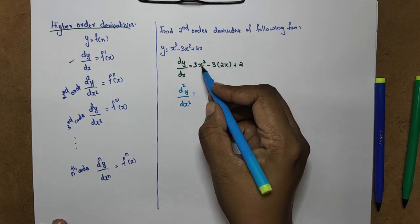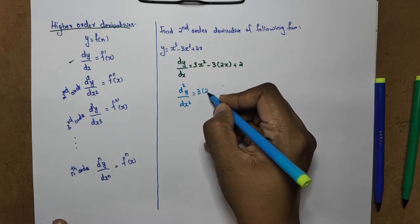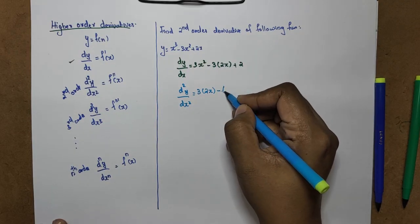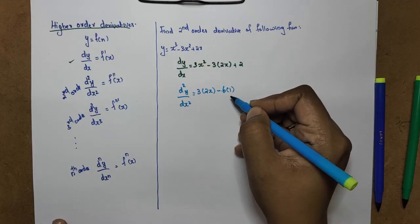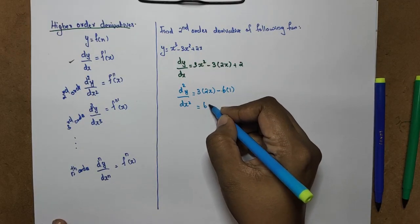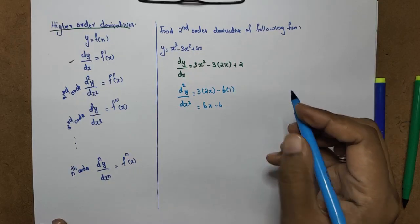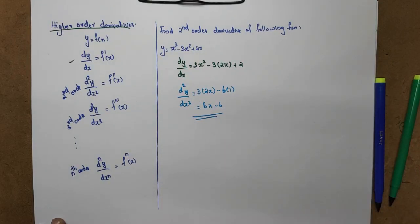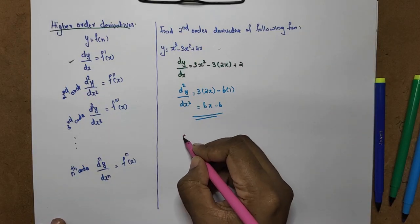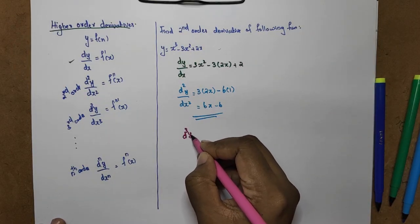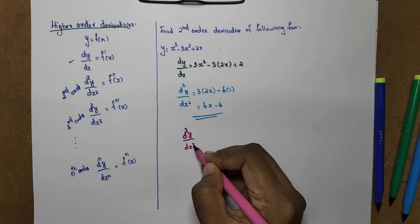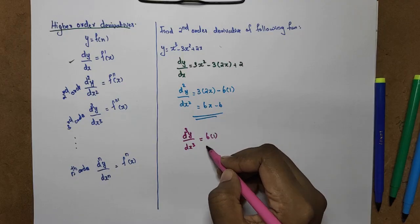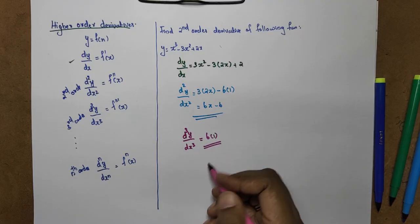d²y/dx² — first, dy/dx: the derivative of x³ is 3x², the derivative of 3x² is 6x, and the derivative of 2x is 2. So dy/dx = 3x² - 6x + 2. Now differentiate again: d²y/dx² = 6x minus 6. Then d³y/dx³ is equal to 6, a constant, since the derivative of x is 1. So the answer is 6.